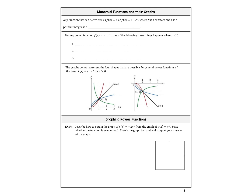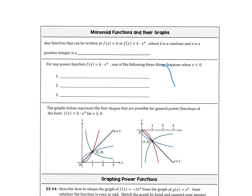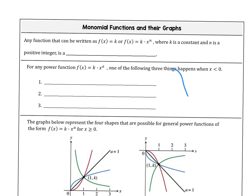Moving on to monomial functions and their graphs. These are super simple because they are one term only. Anywhere we have a single term — no pluses or minuses — it's called a monomial function. For any monomial function, one of three things happens for x less than zero.